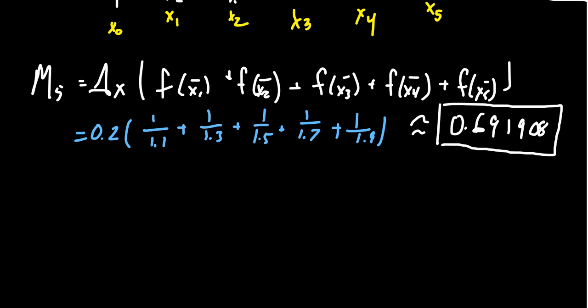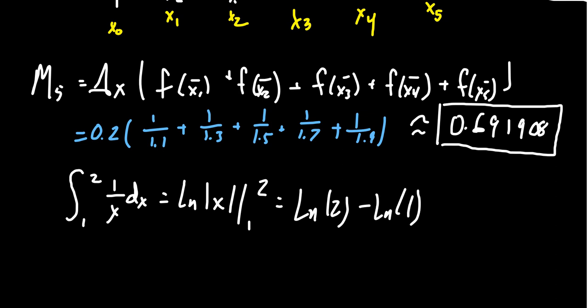Now, the reason we chose this example is because this is actually an integral that we know how to compute. Because after all, the antiderivative of 1 over x is the natural log of x as we go from 1 to 2. And so this is going to be the natural log of 2 minus the natural log of 1. But I want to remind you that the natural log of 1 is actually just 0.